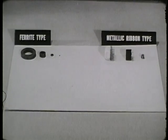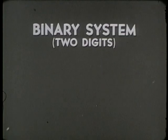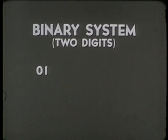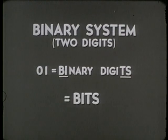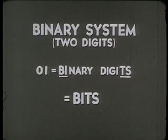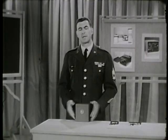Both types of magnetic cores are remarkably adaptable to the language of data processing. Many ADP systems use the binary system of numbering, which employs just two digits, zero and one. These two digits are called binary digits, or bits for short. A bit is either a zero or a one, nothing else. Why do we use binary? Because a bit can be represented by any bistable device, and a magnetic core is a bistable device.